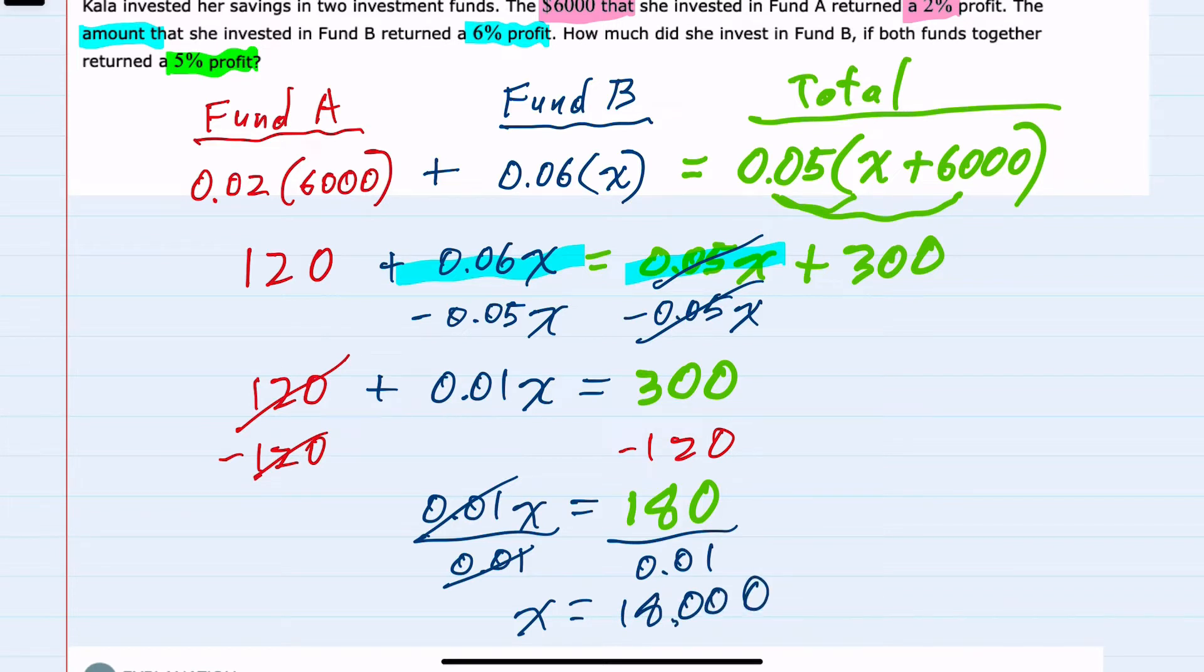Looking back, we were asked to find how much was invested in Fund B. Fund B was our unknown X, so our solution is 18,000.